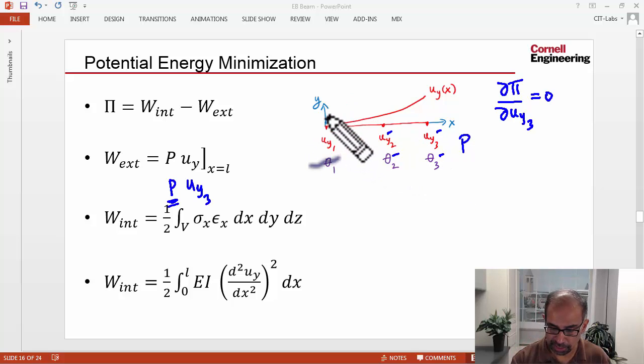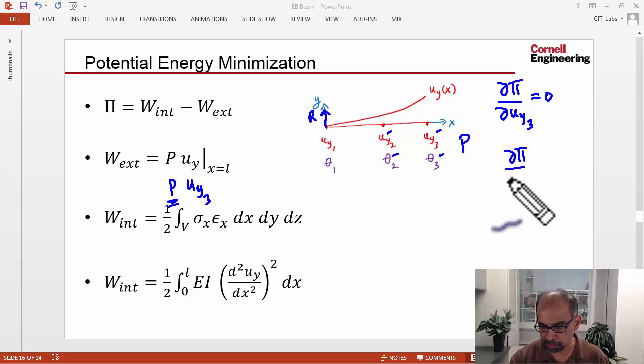Correspondingly, here you have a reaction because you're fixing the beam over there. By analogy, when you take the derivative of the potential energy with respect to uy1, that has to be zero. That's true because if I perturb uy1 by a little bit, the potential energy has to increase.